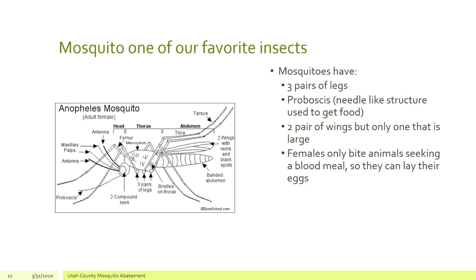Probably our favorite insect here at mosquito abatement is the mosquito, because we like to kill it the very most. Mosquitoes have three pairs of legs. They have a proboscis, which is a specialized mouth part that forms a needle used to get their food — both from plants as they grab nectar, and also from you as they seek a blood meal to lay their eggs. They have two pairs of wings but only one that is really visible. The females are the only ones that bite us to gain the blood meal for laying eggs.